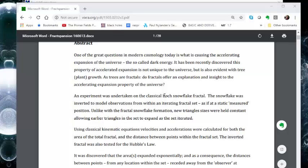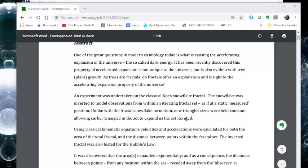An experiment was undertaken on the classical Koch snowflake fractal. The snowflake was inverted to model observations from within an iterating fractal set as if at static measured position. Basically, he's placing you on the fractal and he's allowing the fractal to grow. Unlike with the fractal snowflake formation, new triangle sizes were held constant, allowing earlier triangles in the set to expand as the set is iterated. That's equivalent to what I was trying to get you to do with my animation, just sort of turn around and look to see as you zoom in, behind you everything is zooming out and expanding.